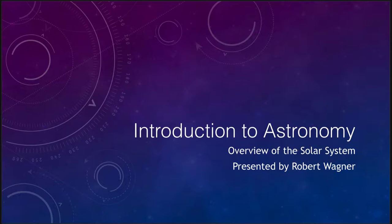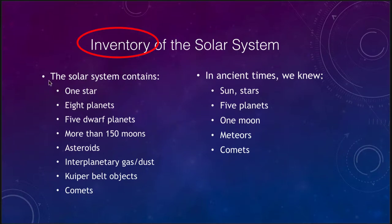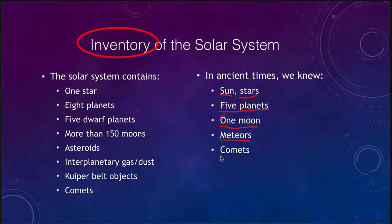Let's start by taking a quick inventory of our solar system. We can look at this two different ways: what we know now and what was known in ancient times. In ancient times, we looked at our solar system as the universe. It had the Sun and the sphere of the stars. Five planets were known — Uranus and Neptune had not yet been discovered — and Earth would not have been considered a planet. There was only one moon known, our own, along with meteors and comets.